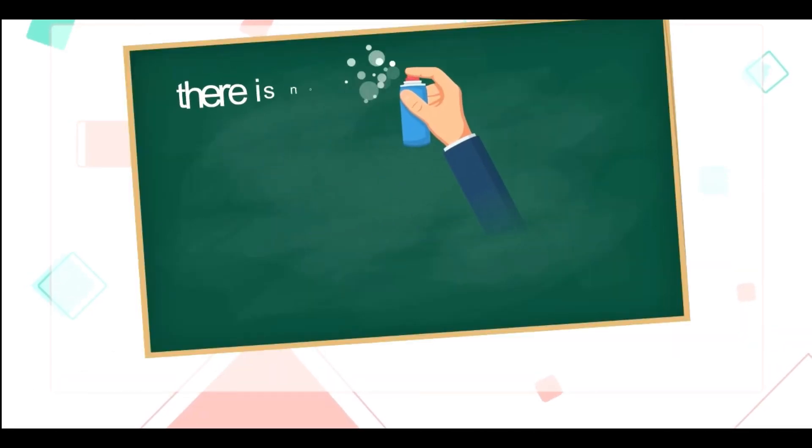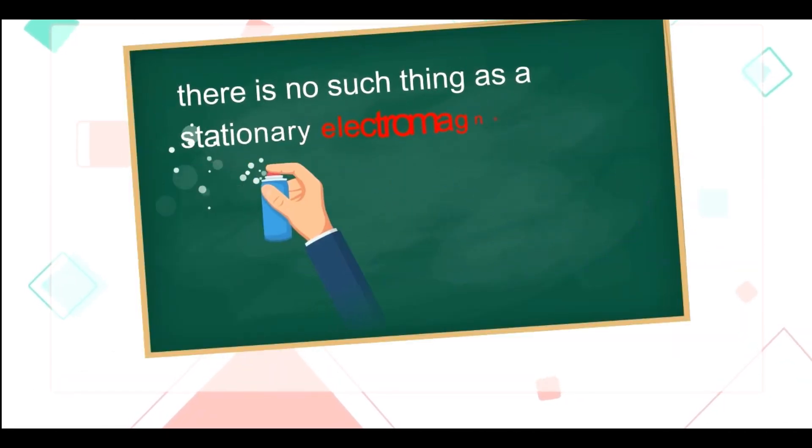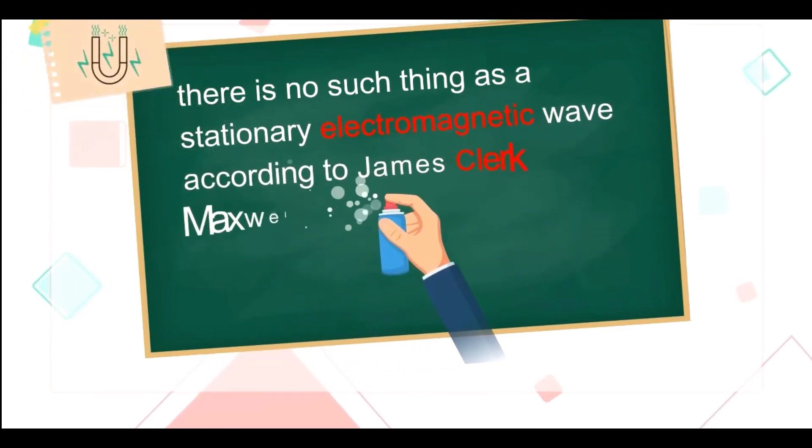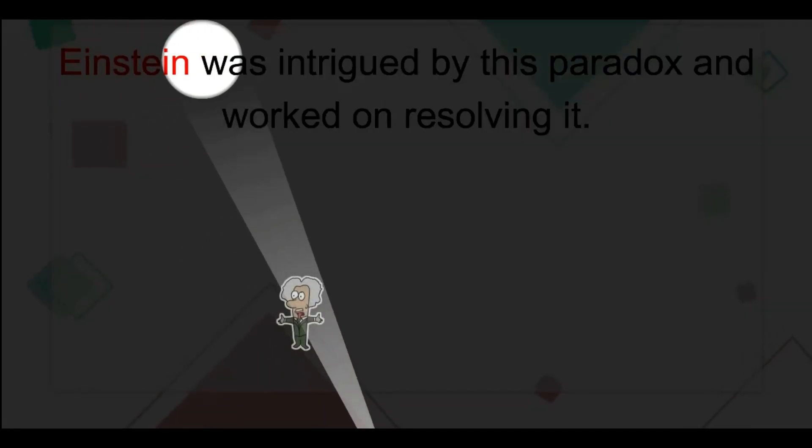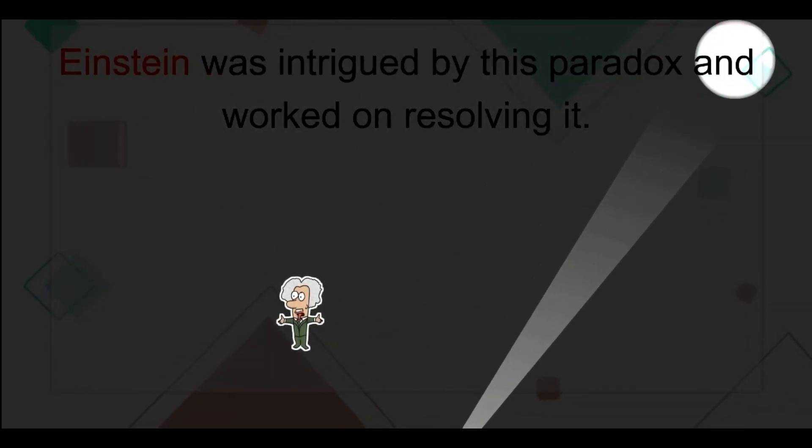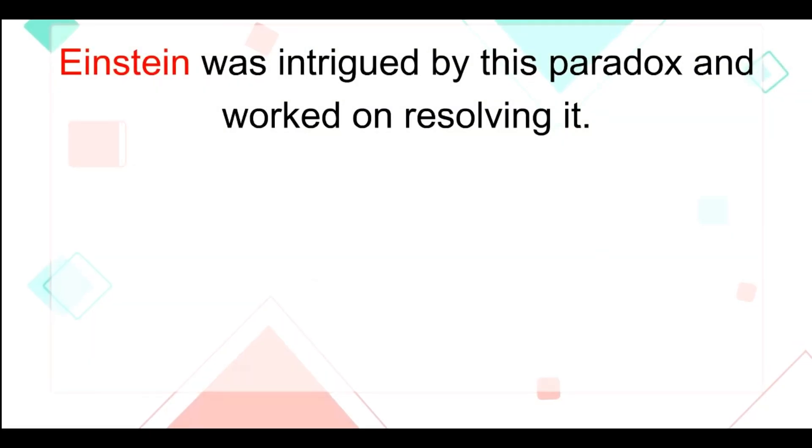However, there is no such thing as a stationary electromagnetic wave, according to James Clerk Maxwell's theory of electromagnetism. Einstein was intrigued by this paradox and worked on resolving it.